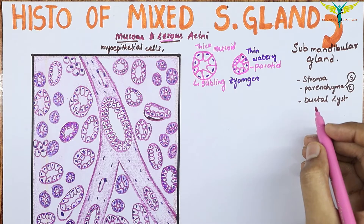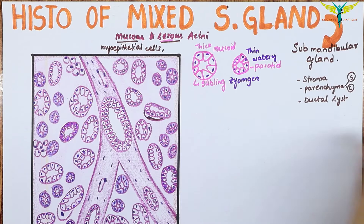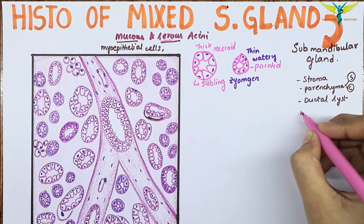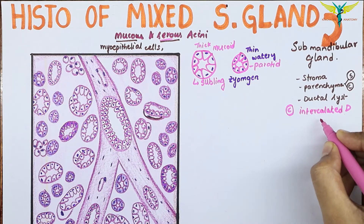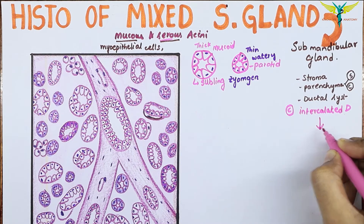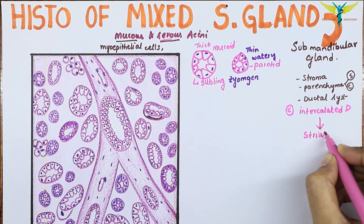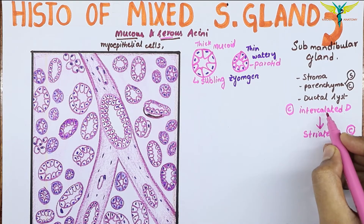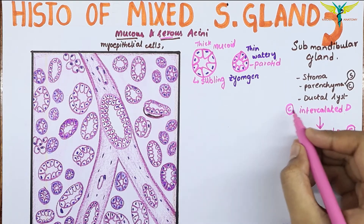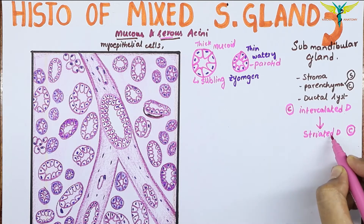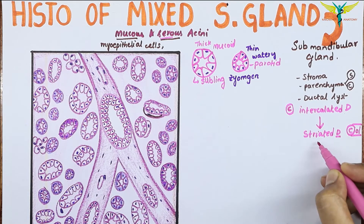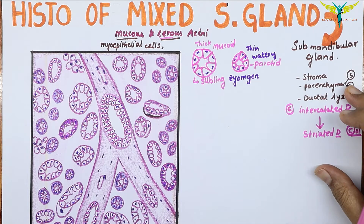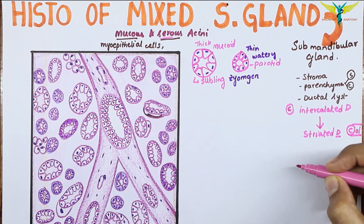The smallest ducts of the ductal system are called the intercalated ducts, and these intercalated ducts open into the striated ducts. The intercalated ducts are lined by cuboidal epithelium, while the striated ducts are lined by columnar epithelium. Both striated ducts and intercalated ducts are intralobular ducts.